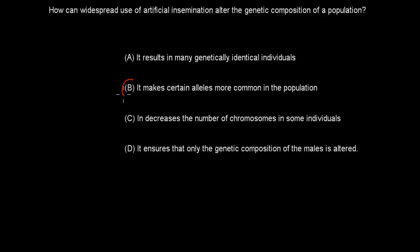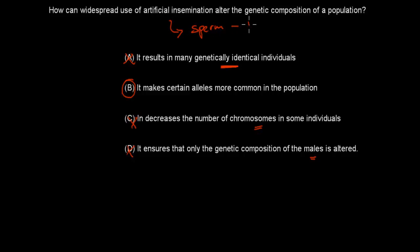Welcome back. The correct answer is B. C is incorrect — it has nothing to do with decreasing the number of chromosomes. D is incorrect — it's not just the males that undergo a genetic change. A is incorrect — artificial insemination doesn't produce clones. Artificial insemination is when you take the sperm of, say, a bull and artificially place it into a cow. We don't get clones; we get certain favorable alleles increasing in the population. That's why B is correct.